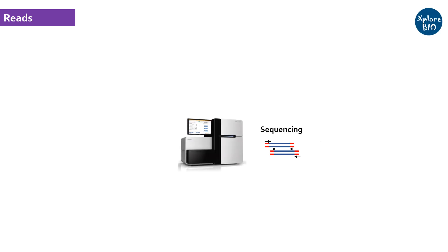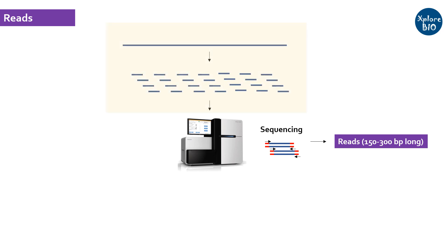First, we will see what are reads. Reads are the smallest and the most basic unit of sequencing. A read is a short sequence obtained after next generation sequencing of fragmented DNA libraries. If the sequencing is done from one end of the fragment, it is called a single-end read, or if it is done from both ends of the fragment, it is called a paired-end sequencing read. Read length depends upon the type of sequencing platform used, but commonly they range between 150 to 300 bases.